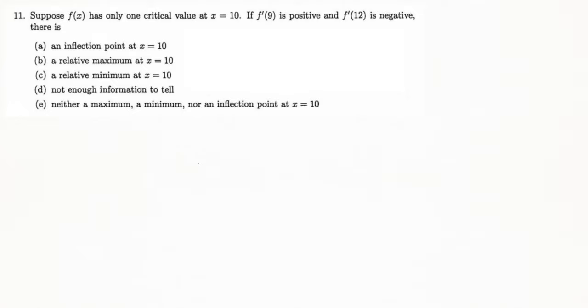Question 11 is really another question that wants us to understand the meaning of what our derivative values tell us. This problem is telling us about two different pieces of derivative information and that we've got a critical value here in the middle of those two values.